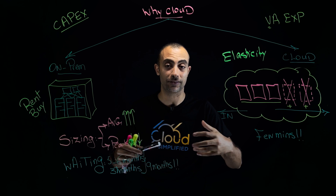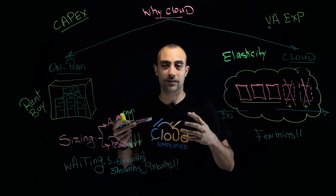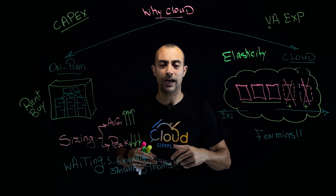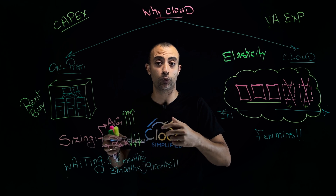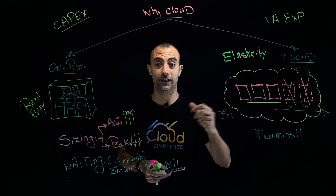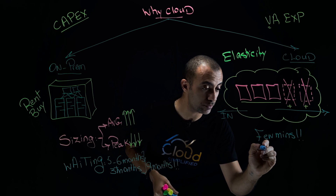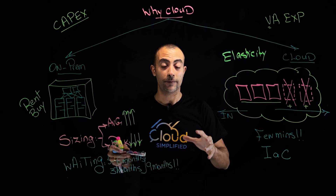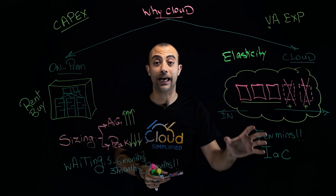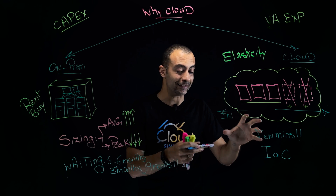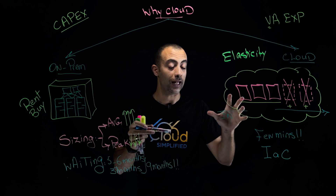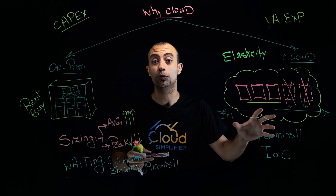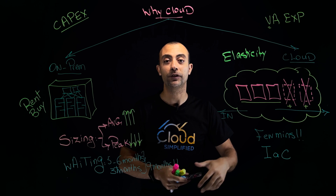You might think this only works for one server or a database instance, but what about a large application with 50 virtual servers, load balancers, security, firewalls, and databases? The answer is still minutes, thanks to IaC — Infrastructure as Code. You save your solution architecture as a template, pass it to the cloud service, and it deploys all resources in the correct order in just a few minutes, giving you a complete application up and running almost instantly.